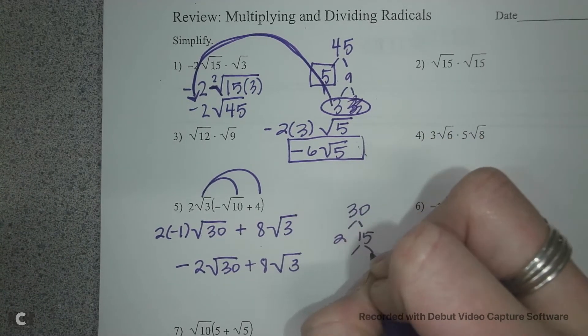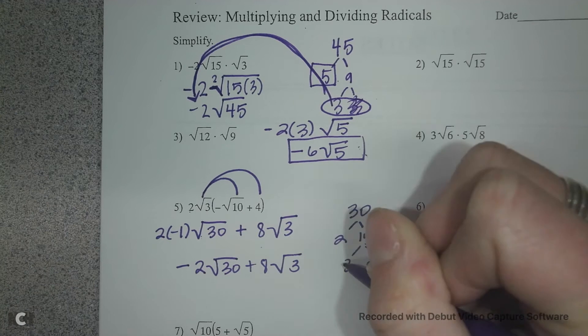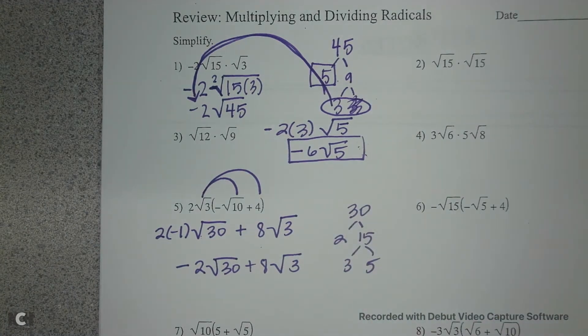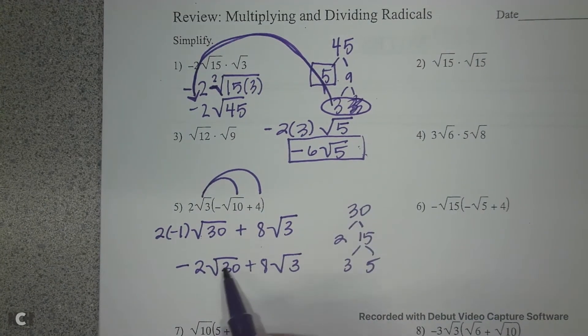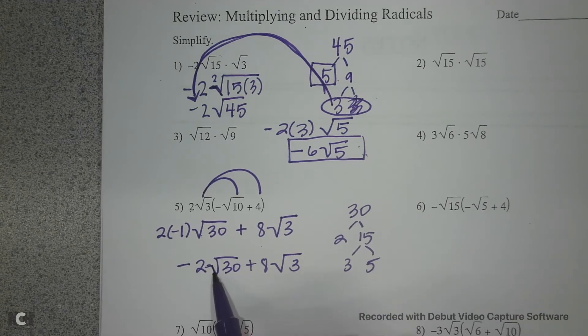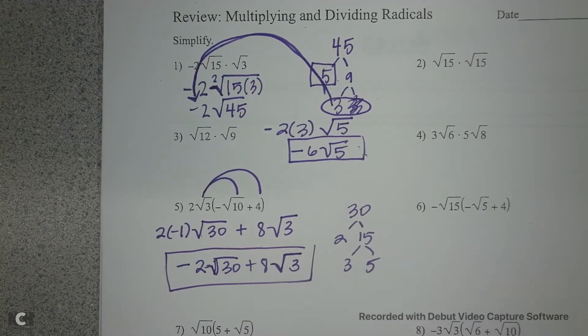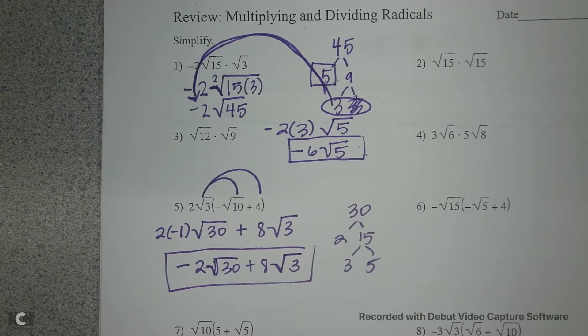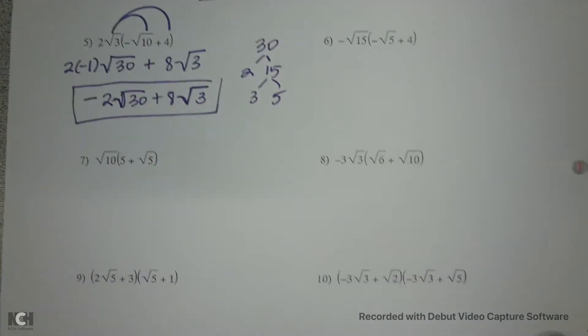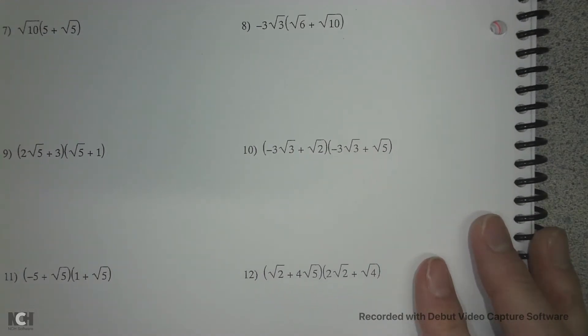We're going to check and make sure we can't reduce 30. So 30 is 2 and 15 and 3 and 5. I don't have any pair of numbers so it stays. And I can't combine these because they're not like terms. One is the square root of 30 and the other is the square root of 3, so this is my final answer.